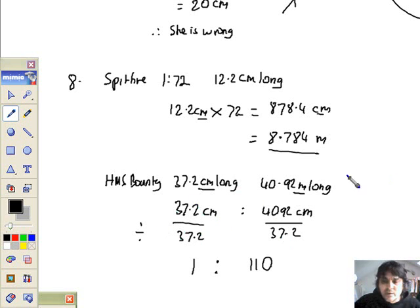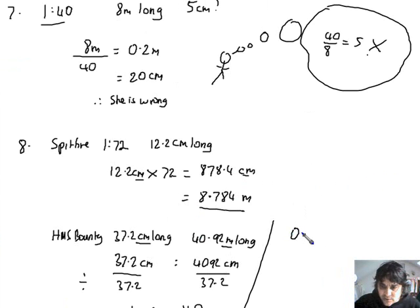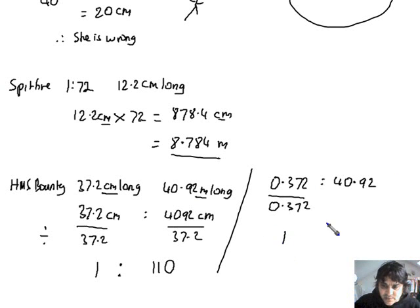Just to prove to you it can go the other way as well. I'm going to work the same thing here. I'm going to convert this into metres. So, 0.372 compared with 40.92. This time we're using metres. If I then divide by the 0.372, this will become 1. If I divide this by 0.372, 40.92 divided by 0.372 still gives me 110. Either way, it works.